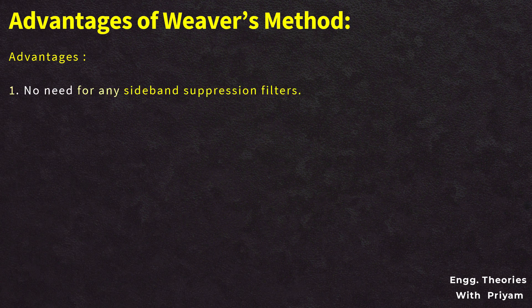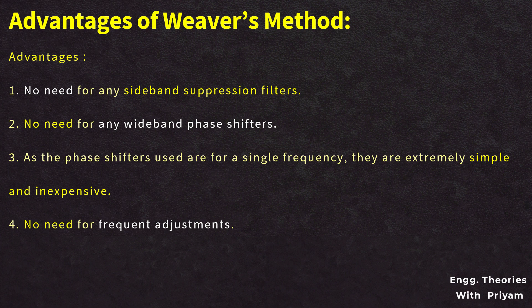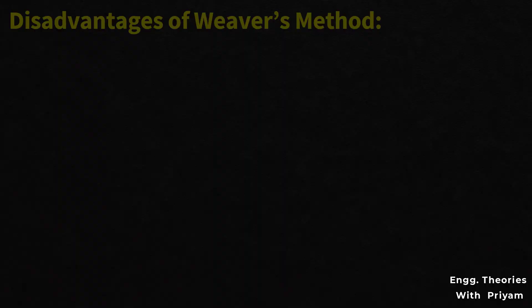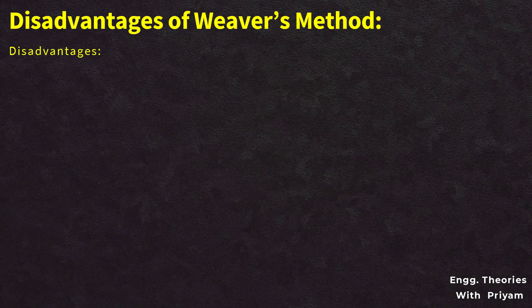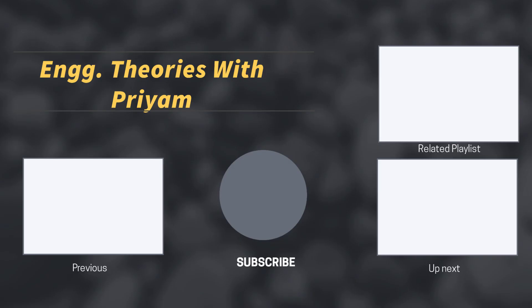In this method, suppression filters for any sideband are not required and wideband phase shifters are also not required. The phase shifters used here are for a single frequency, so they are very simple and inexpensive, and there is no need for frequency adjustment. It is easy to change from upper sideband SSBSC to lower sideband SSBSC and vice versa. The disadvantage is that, unlike the filter method, this method is very complex and commercially expensive. This concludes our discussion for this lecture. If you have any questions, feel free to post them in the comment section and don't forget to hit the subscribe button.